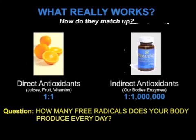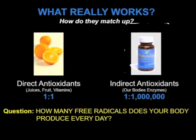So what really works? How do the direct and indirect antioxidant approaches match up to one another? It comes down to ratio. Direct antioxidants — like your juices, fruits, and vitamins — work on a one-to-one ratio. When you take these into your body and your body metabolizes them, one molecule of, say, vitamin E will neutralize one free radical. But then you need another, so you need to keep consuming them. It works — it works very well — but only on a one-to-one ratio.